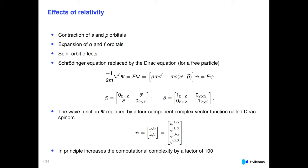In principle, going from one to four components plus complex arithmetic might suggest the computational complexity increases by a factor of 100. In practice — and this is important to emphasize — you can get this down to a factor of about 10 for full four-component calculations through various techniques for speeding up the calculations.